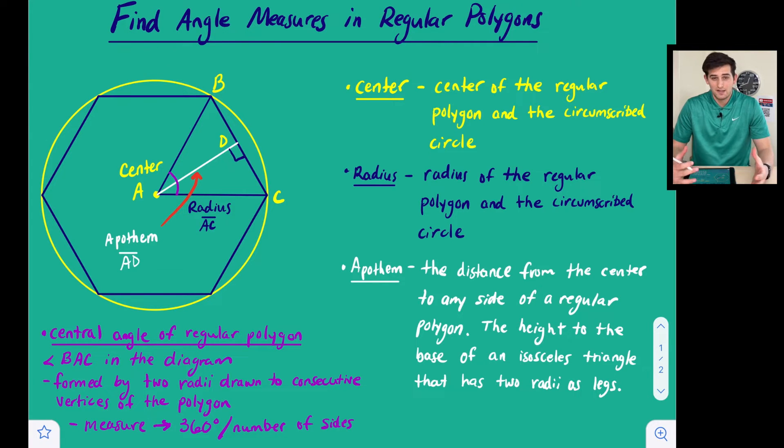Here in this case we have a six-sided regular hexagon, so we would divide 360 by 6 to get our angle measure for our central angle.